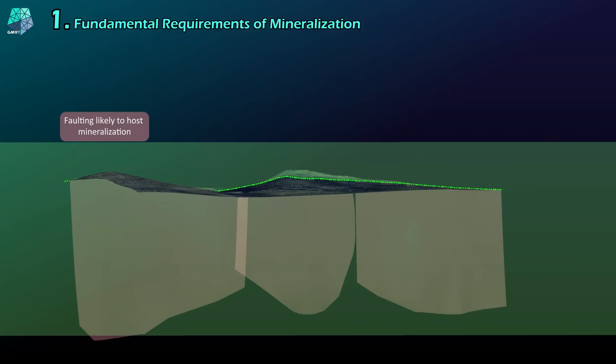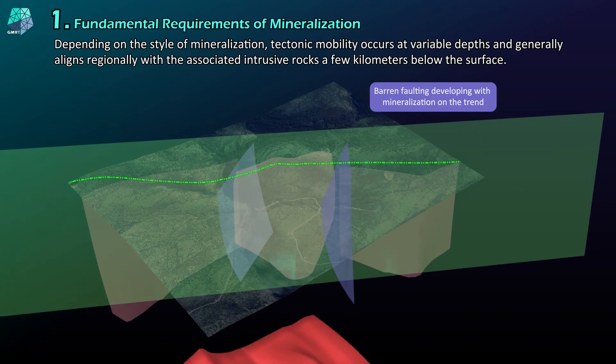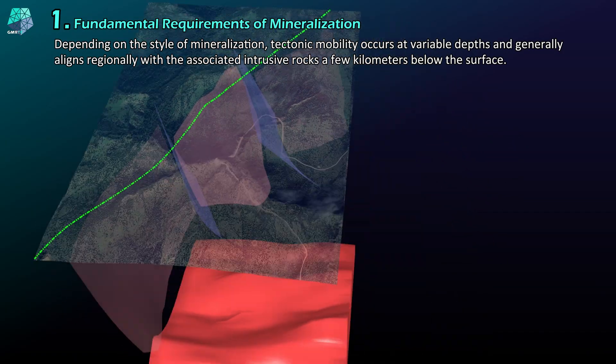Depending on the style of mineralization, tectonic mobility occurs at variable depths and generally aligns regionally with the associated intrusive rocks a few kilometers below the surface.